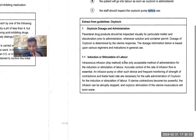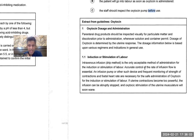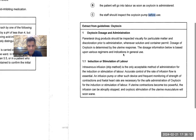Reading the second paragraph: IV infusion is the only acceptable method for the administration and induction of labor. Accurate control of the rate of flow is essential, and an infusion pump or frequent monitoring of the fetal heart rate are necessary for the safe administration of oxytocin for the induction or stimulation of labor.